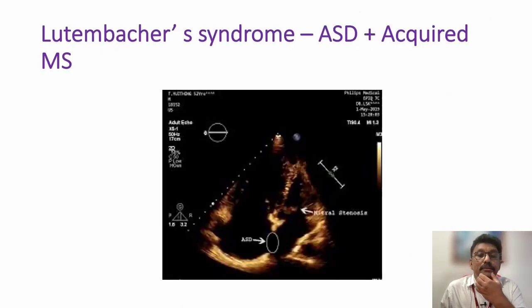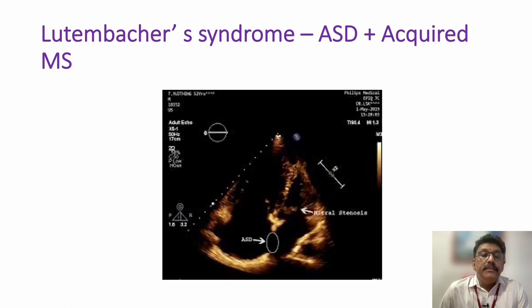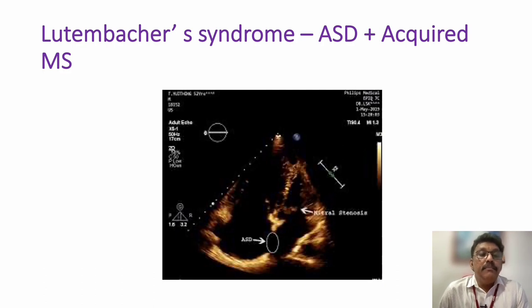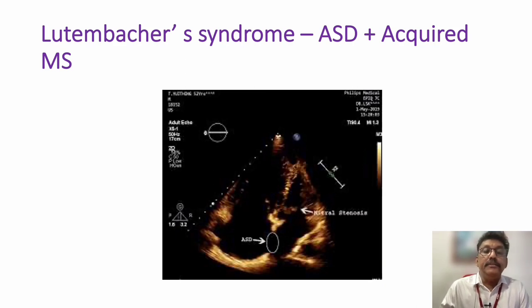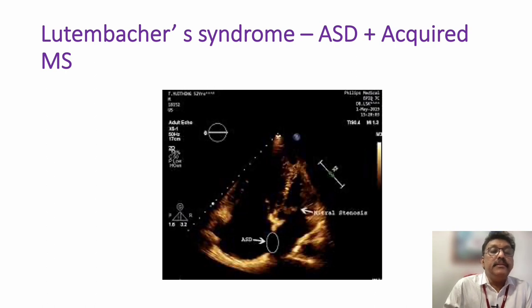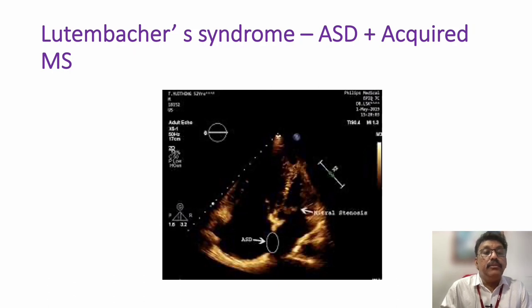Another syndrome associated with mitral stenosis is actually associated with ASD. A patient who has ASD can have associated acquired mitral stenosis. ASD is a congenital disorder, but if mitral stenosis develops in such patients, it is called Lutembacher syndrome — where the ASD is congenital and has nothing to do with the mitral stenosis, which is acquired due to rheumatic heart disease.